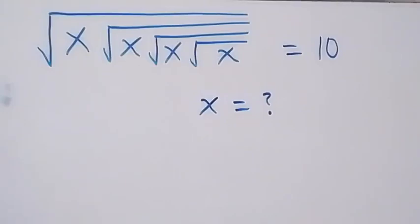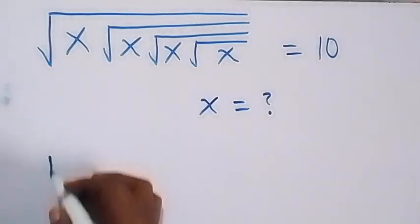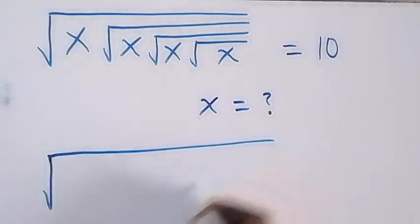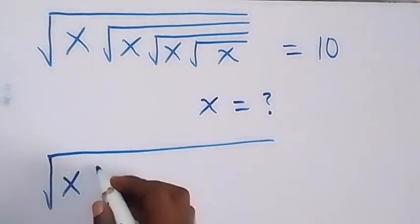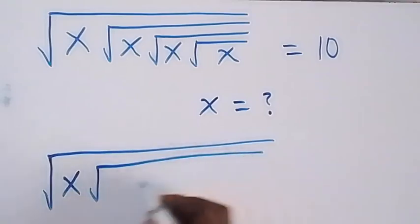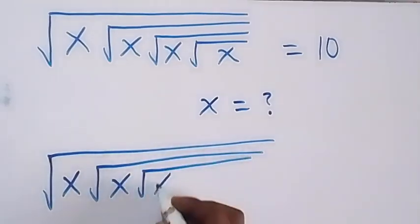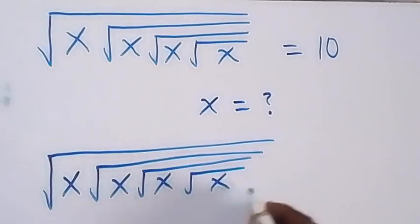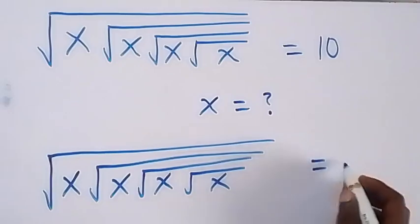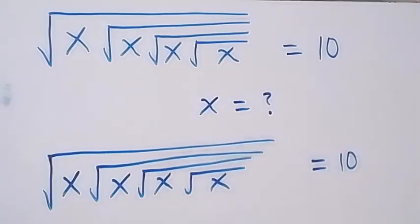Hello, you are welcome. Here is a nice square root math problem. What you are given is: square root of x, then inside that we also have square root of x, also square root of x, then square root of x, which is equal to 10 on this side.